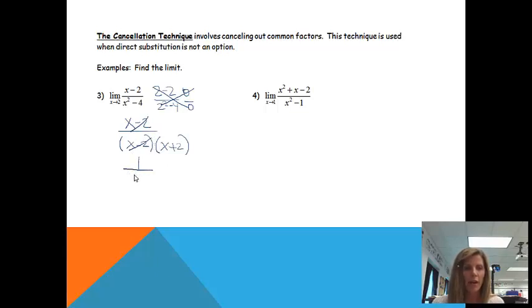So when I do that, I will be left with 1 over x plus 2. And again, my whole goal in doing that was to rewrite the problem so now I can use direct substitution. So now, notice I can plug in the 2. So if I plug in the 2, I get 1 over 2 plus 2, and you'll notice I get the answer of 1 fourth. So 1 fourth is my limit.